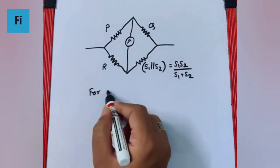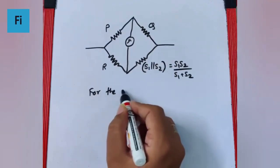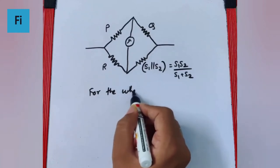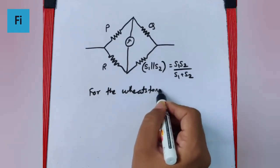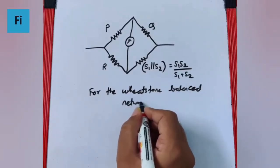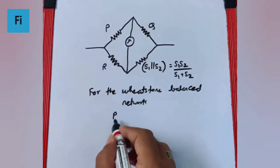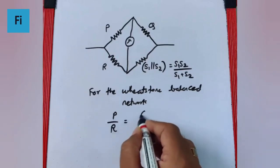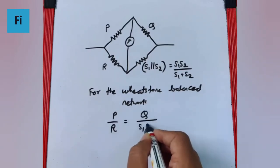For the Wheatstone balanced network, P/R equals Q over S1·S2/(S1 + S2).